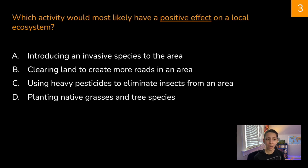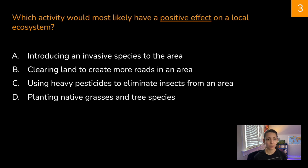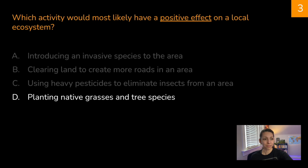Which activity would most likely have a positive effect on a local ecosystem? A, introducing an invasive species to the area; B, clearing land to create more roads; C, using heavy pesticides to eliminate insects from an area; or D, planting native grasses and tree species. The correct answer is D — planting native grasses and tree species.